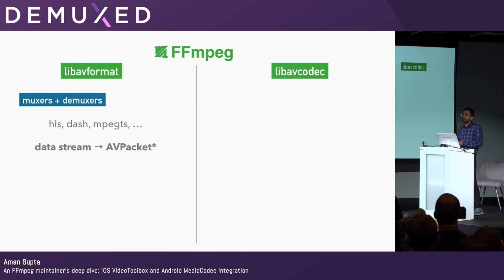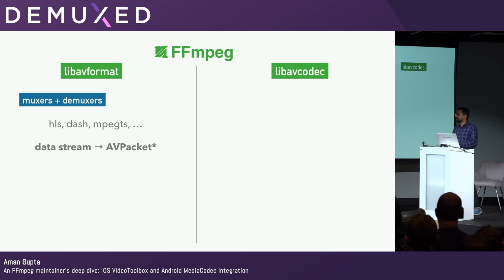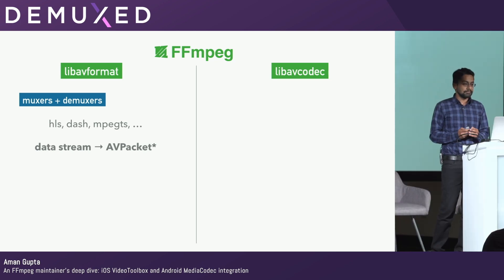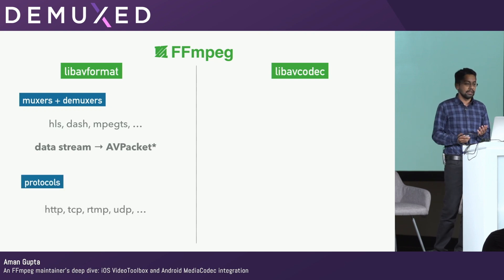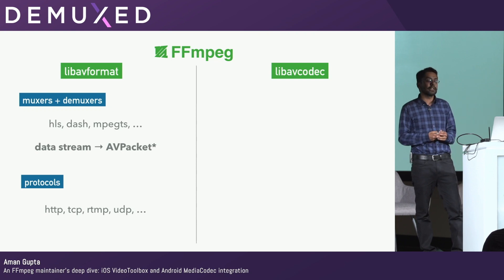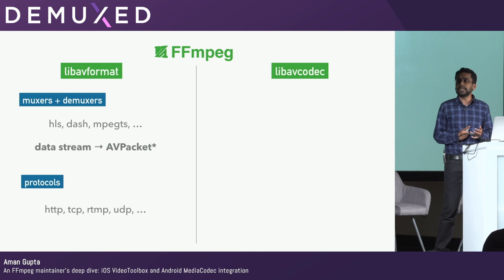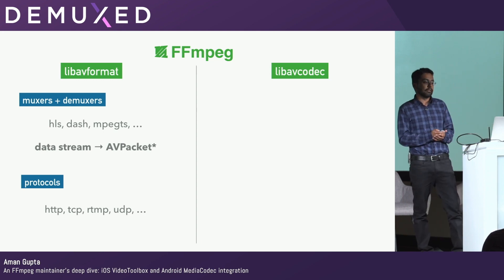LibAVFormat does two major things. One, it has muxers and demuxers — it decodes formats, takes a data stream, and converts it into an AV packet, which is one of the major structures in FFmpeg. These are formats like HLS, DASH, MPEGTS, et cetera. It also contains protocol implementations — stuff like HTTP, TCP, UDP. That's also part of LibAVFormat.